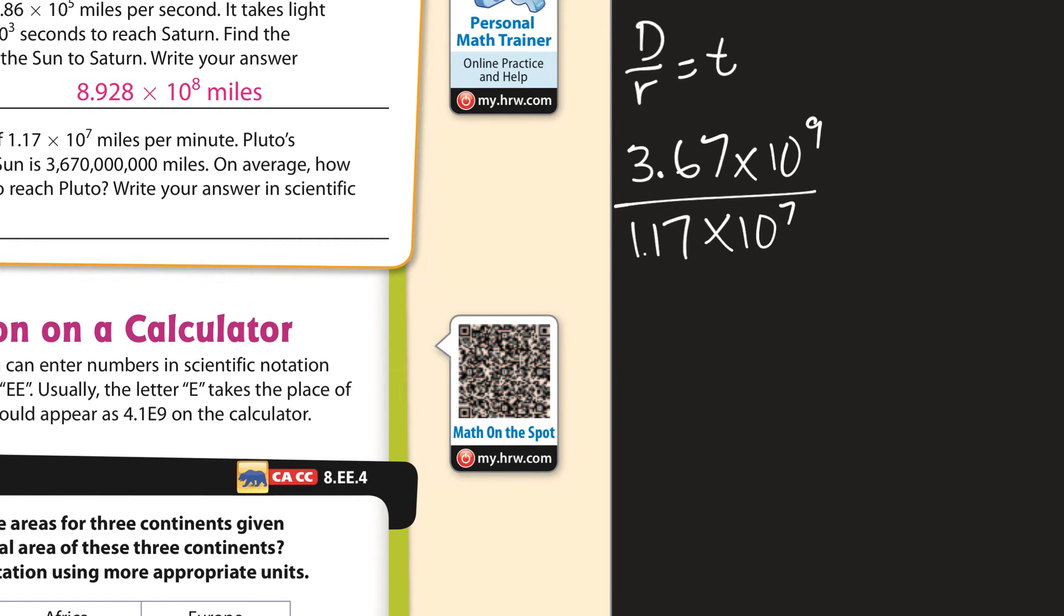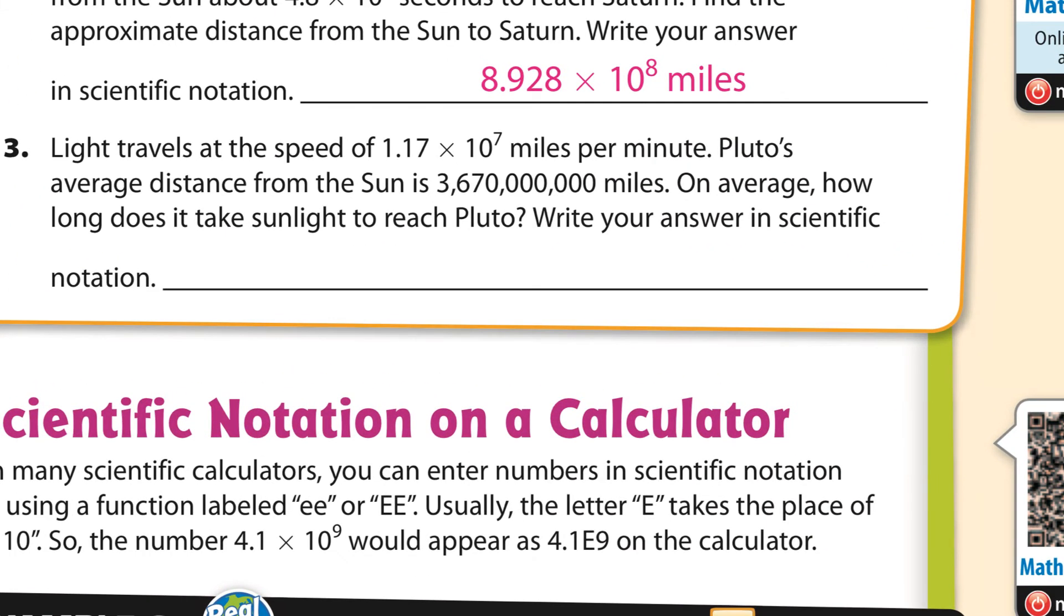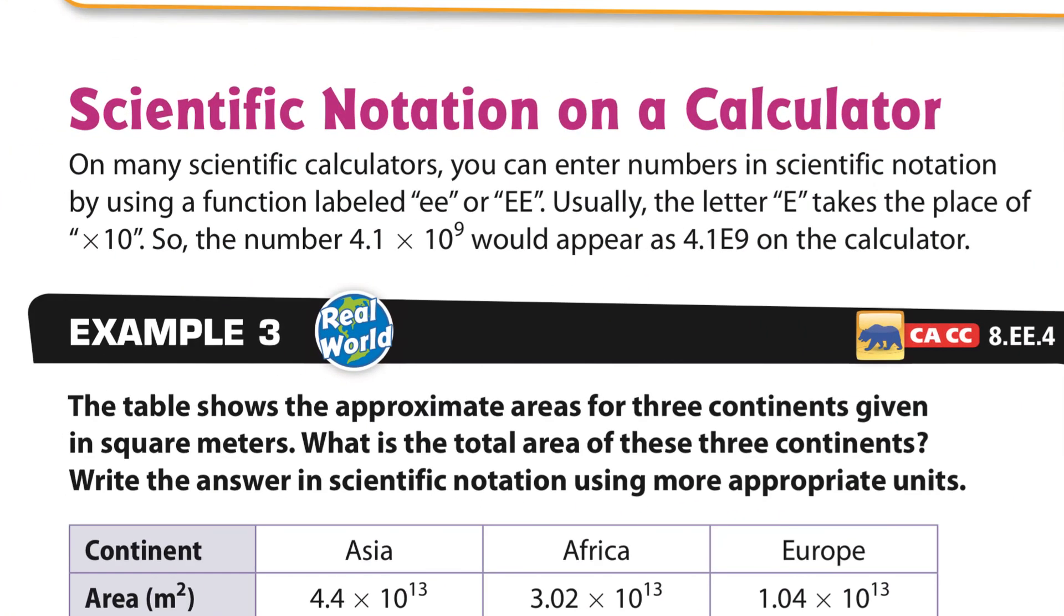So 3.67 divided by 1.17 is 3.14. Okay. Times 10. And then you could subtract those exponents, 9 minus 7, because you're dividing the powers of 10. 3.14 times 10 to the 2nd. Let's see how I did. There. 3.14 times 10 to the 2nd. And got it. Super.